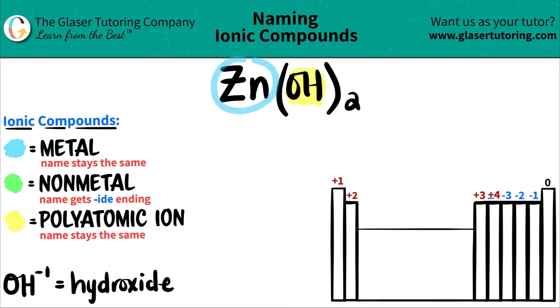And now we just have to name what the zinc is. Now, if we look at zinc on the periodic table, it's in this little corner right here. So it's part of a transition metal. It's a transitional metal. So it's a metal. So it's going to be in blue.